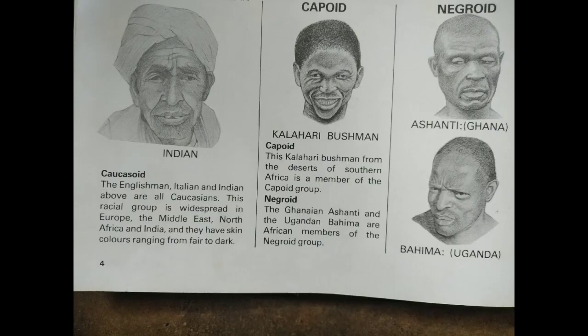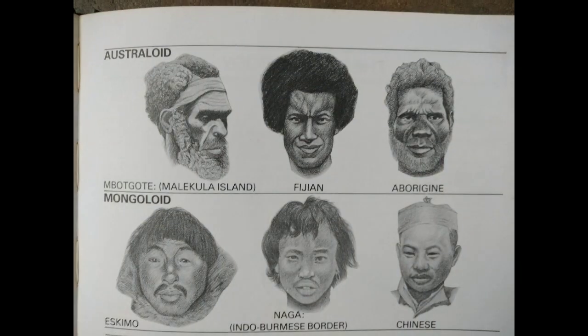This Kalahari Bushman from the deserts of Southern Africa is a member of the Capoid group. The Gnayana Shandi and Ugandan Bahima are African members of the Negroid group. Although they have different facial characteristics and features, the man from Molucca Island, the Fijian and the Australian Aborigine are all Australoid peoples with dark skins. With their yellowish skin, dark brown eyes and straight black hair, the Eskimo, Burmese man and Chinese are all Mongoloids.